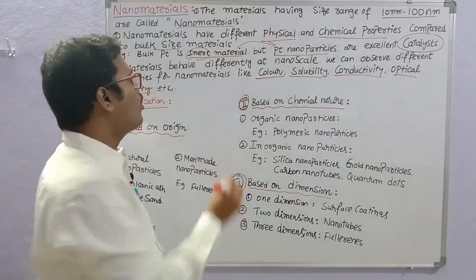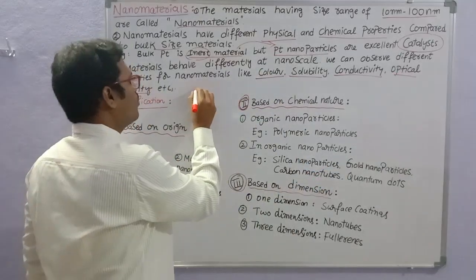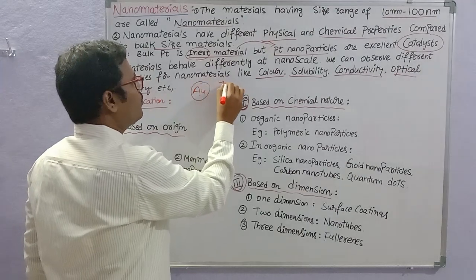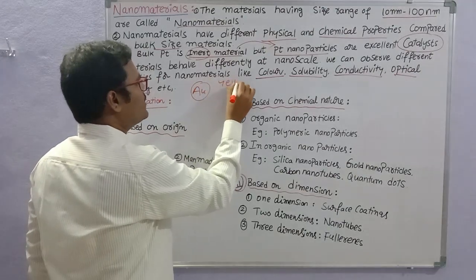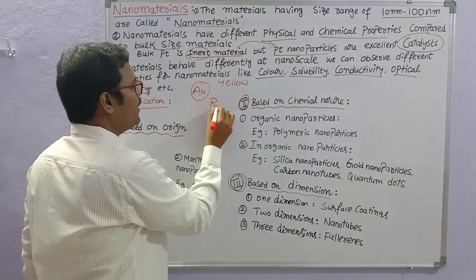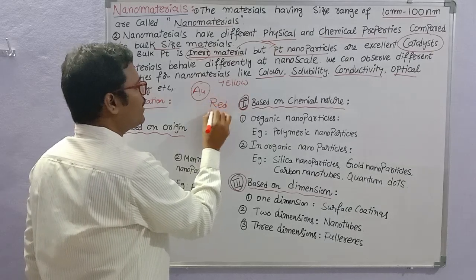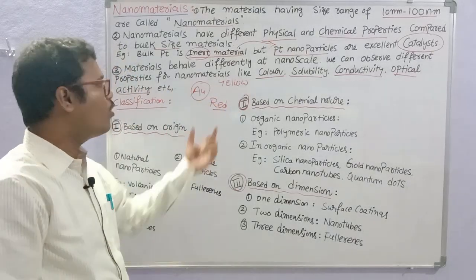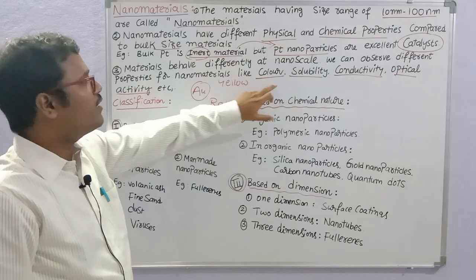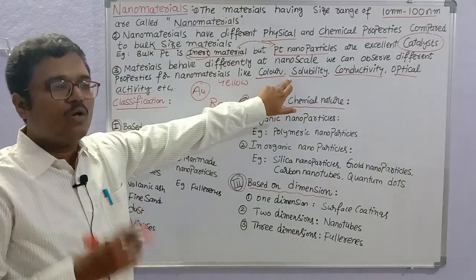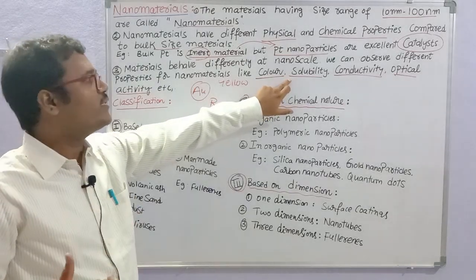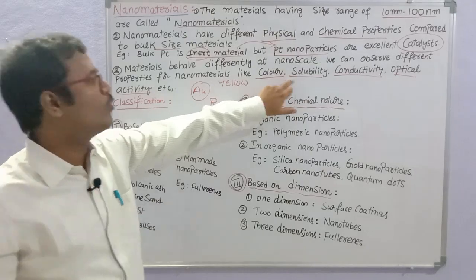For example, gold in bulk size has a yellow color, whereas gold nanoparticles appear red in color. Similarly, solubility — the dissolving capacity in a solvent — is different for nanomaterials compared to bulk materials.